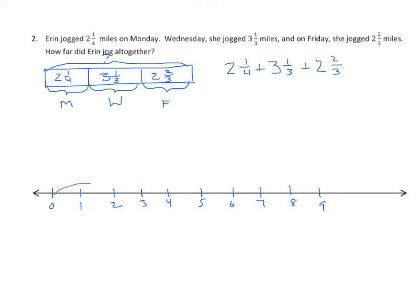We're going to write the expression. We have 2 and 1 fourth plus 3 and 1 third plus 2 and 2 thirds. Well, we're going to start with our whole numbers first. I have 2 plus 3 plus 2. So, we know that the sum of our whole numbers is equal to 7 plus 1 fourth plus 1 third plus 2 thirds. Now, before I jump right to finding a common unit, I notice that I have two fractions that have the same denominator. So, I'm going to deal with those first. It's these two. 2 thirds and 1 third. And, of course, 2 thirds and 1 third are equal to 1.